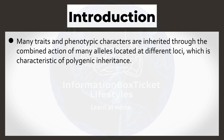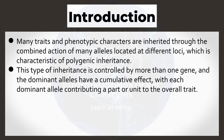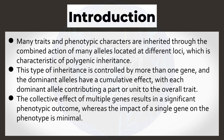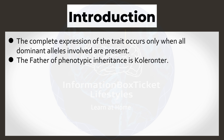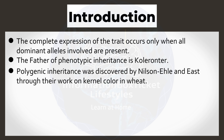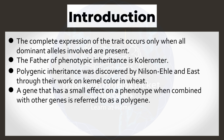This type of inheritance is controlled by more than one gene, and the dominant alleles have a cumulative effect, with each dominant allele contributing a part or unit to the overall trait. The collective effect of multiple genes results in a significant phenotypic outcome, whereas the impact of a single gene on the phenotype is minimal. The complete expression of the trait occurs only when all dominant alleles involved are present. The father of polygenic inheritance is Johannsen. Polygenic inheritance was discovered by Nilsson, Ehle, and East through their work on kernel color in wheat. A gene that has a small effect on a phenotype when combined with other genes is referred to as a polygene.